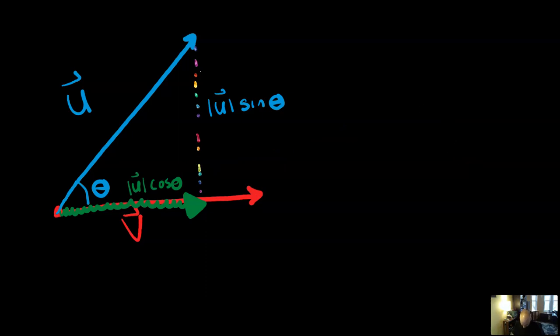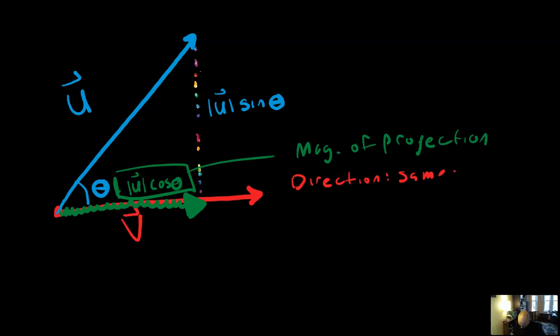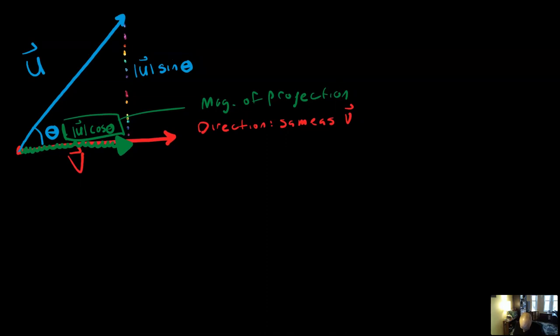Why is that true? Well, because cosine theta is adjacent over hypotenuse. And hypotenuse is the magnitude of vector U, whatever magnitude that is. So then the adjacent must be magnitude of U times cosine of theta. All right, so that actually tells me the size of the projection. So this is the magnitude of the projection. And the direction we already said is going to be the same as V. So if I know the magnitude of a vector and I know the direction of the vector, I should be able to come up with an equation for the vector. And here's how we're going to do it.